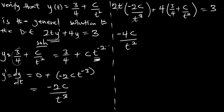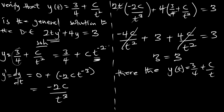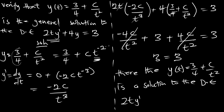The -4c/t² and +4c/t² cancel, giving us 3 = 3. Therefore, the expression y(t) = 3/4 + c/t² is indeed a solution to the differential equation 2t·y' + 4y = 3. After the substitution, we confirmed the answer.